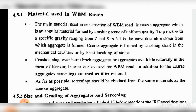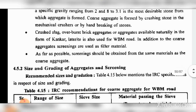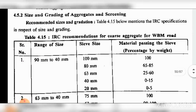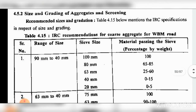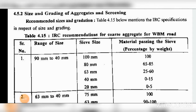Regarding size and grading of aggregate and screening: as per the IRC (Indian Road Congress) specification, the recommended size and gradation is given in the table. For the 90 mm to 40 mm range, the sieve sizes used are 100, 80, 63, 40, and 20 mm.